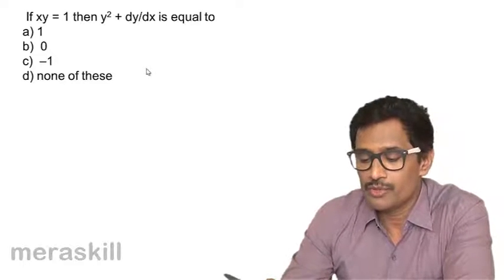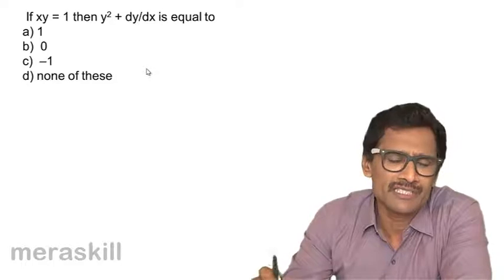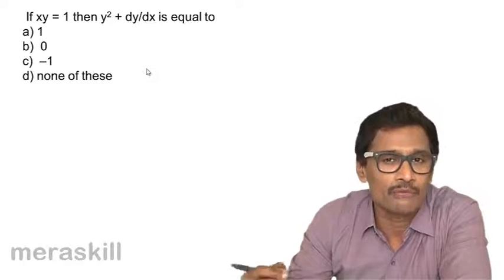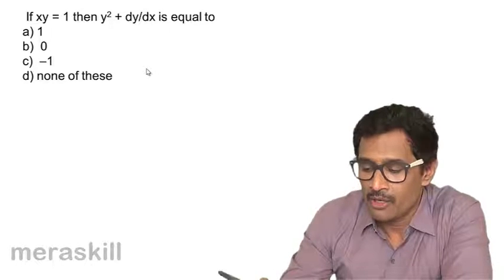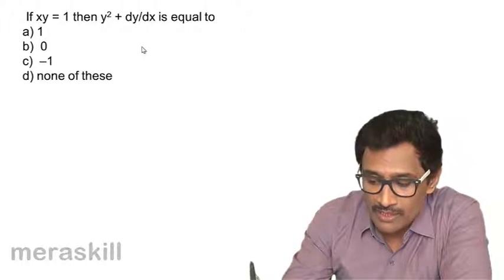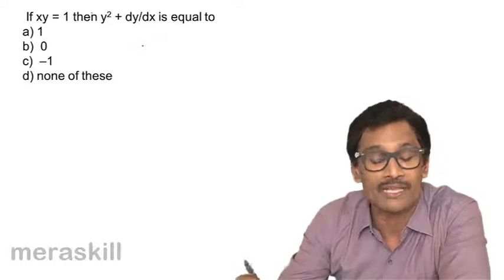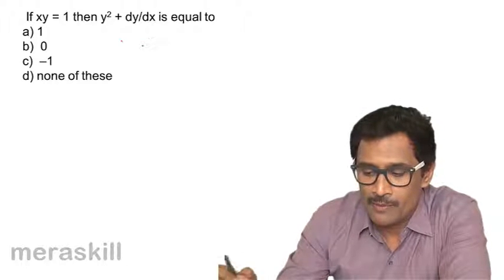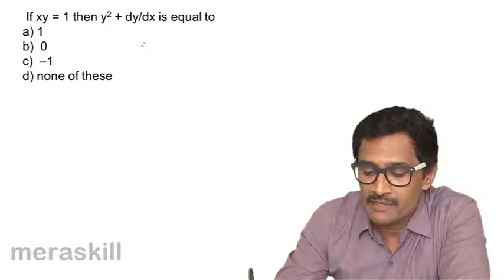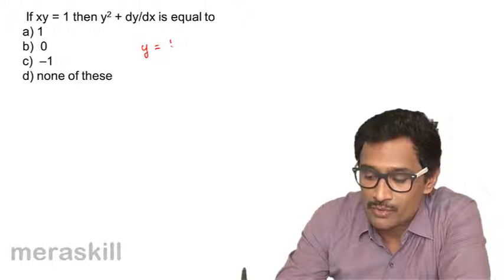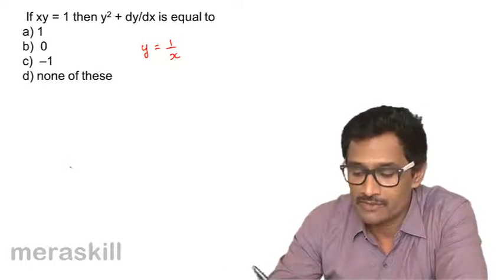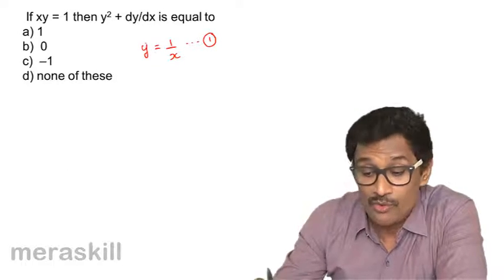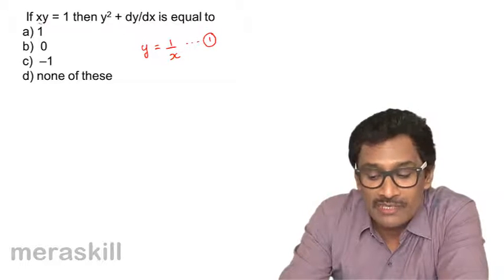Here we are going to use a simple rule. We'll be coming across examples that introduce rules you will use more intensely later on. Here, what you see is a kind of what is called an implicit function — it's not told y equals 1 by x outright. If you see x times y equals 1, we can write it as y equals 1 by x. This is converting an implicit function to an explicit function.